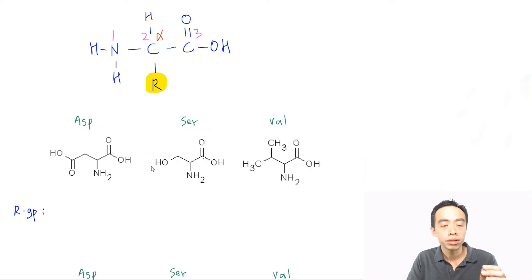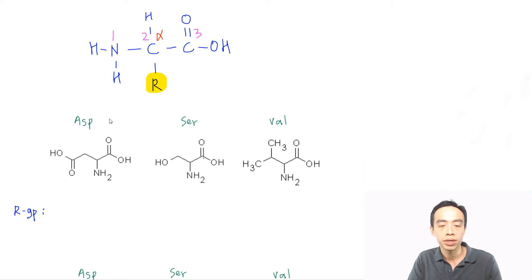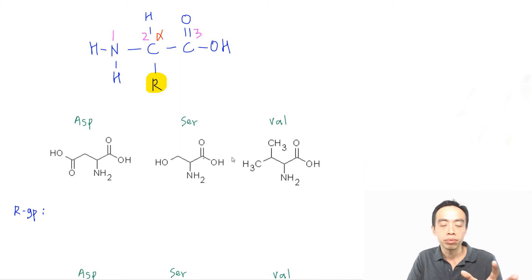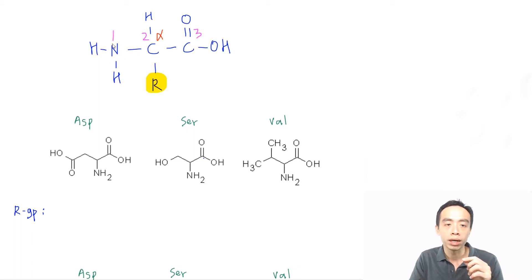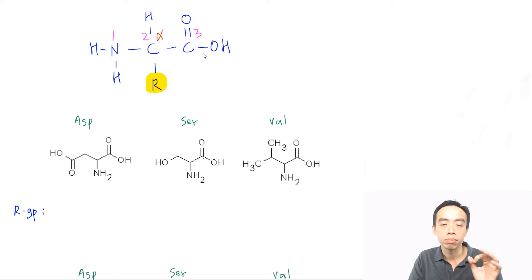Let's have some examples. I have three amino acids: ASP, SER, and VAL. The format presented here is a bit different, but since I know these are alpha amino acids found in proteins, I can easily find position 1 — my amine group — position 2 — the carbon with the R group — and position 3 — my acid group. We do that first to identify the R group sticking out of the second carbon.